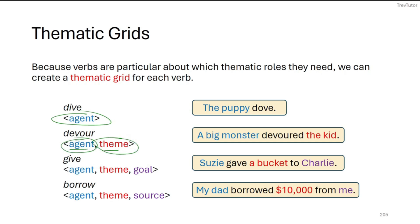For the case of give and borrow, we need different things here. So agent, theme, and then we either want to say goal or probably better is a recipient in this case. So Susie gave a bucket to Charlie. They're occurring in that order. And for borrow, we need an agent and a theme, but we also include a source in this case because it is coming from someone. So whenever we have a verb in a particular context, we can assign it theta roles.